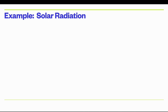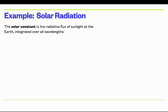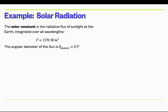Let's look at a simple example: calculating the specific intensity of the sun's radiation. The solar constant is the radiative flux of sunlight at Earth integrated over all wavelengths, which turns out to be 1370 watts per square meter — every square meter of Earth receives 1370 watts from the sun. To calculate specific intensity, we need both the flux and the solid angle of the sun as seen from Earth.